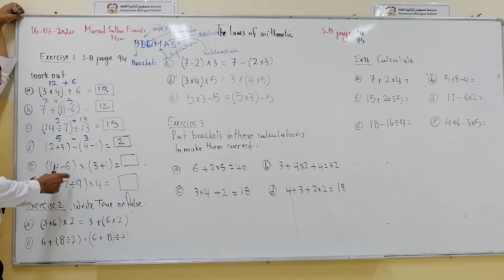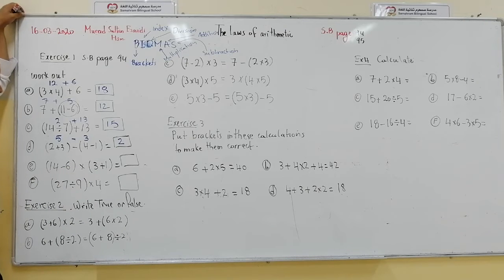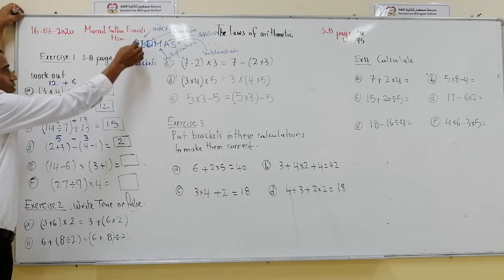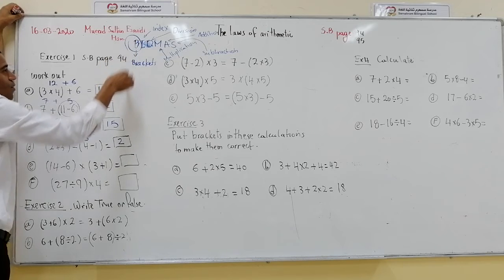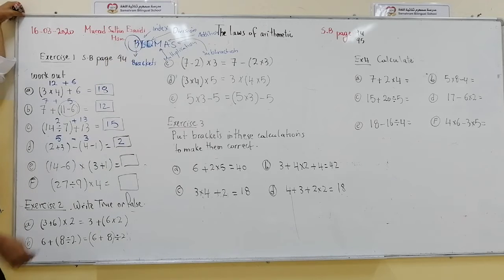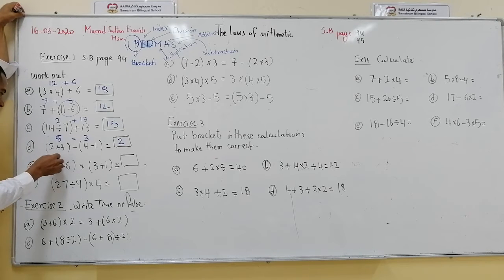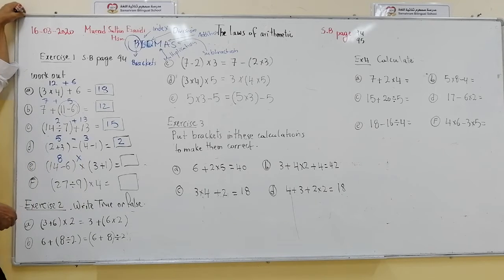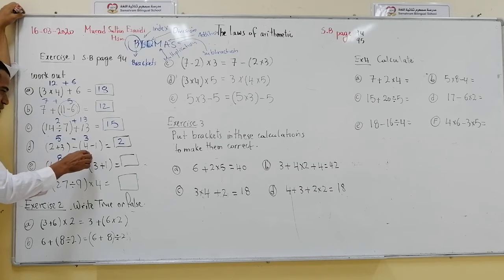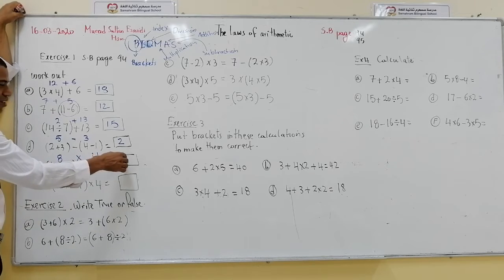Then (14 minus 6) multiplied by (3 plus 4). I will calculate what is inside the brackets first. 14 minus 6 is 8. Then 3 plus 4 is 4... wait, 3 plus 1 is 4? No — 3 plus 4 is 7. Now 8 multiplied by 4 is 32.